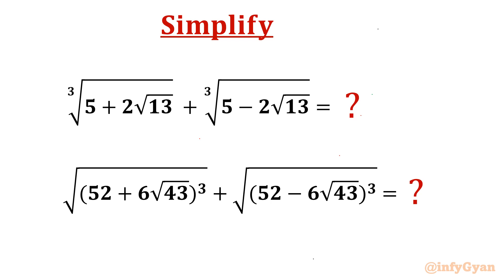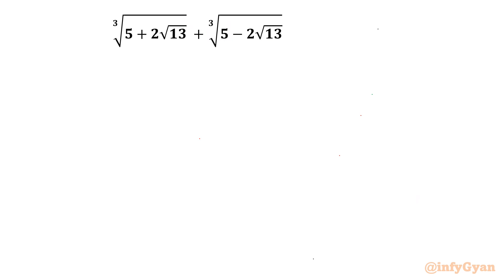Welcome back to InfiJarn friends. In this very exciting video on algebraic expressions, we are going to take up two challenging problems from expression simplification. Question number one: cube root of (5 + 2√13) plus cube root of (5 − 2√13). Question number two: simplify (√(52 + 6√43))³ plus (√(52 − 6√43))³. So let us begin with the very first problem.